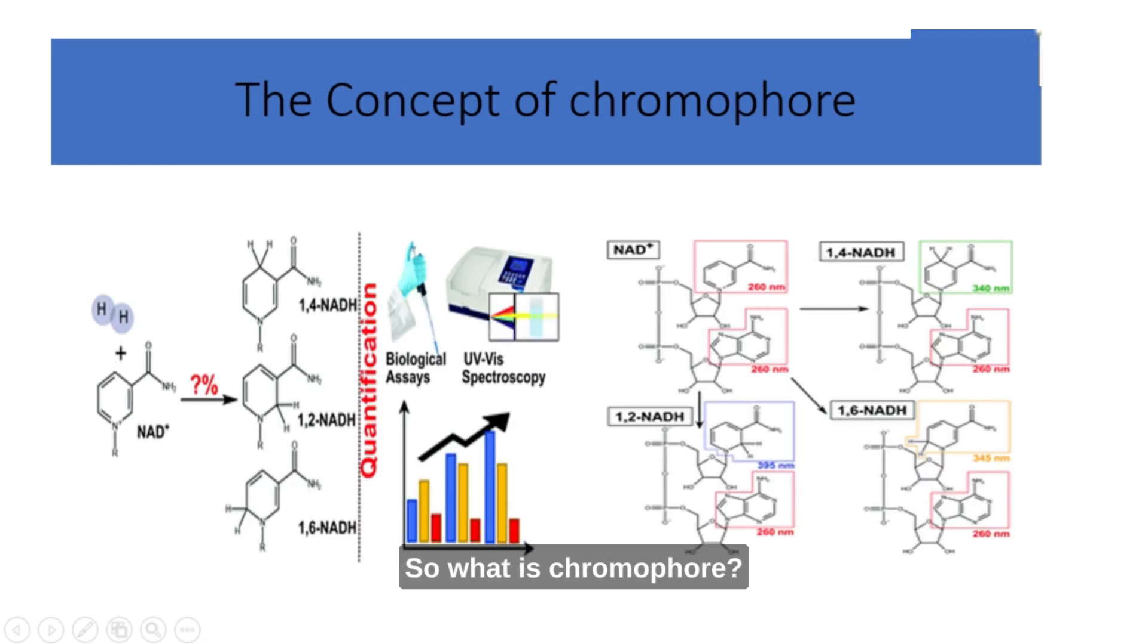So, what is chromophore? A chromophore is a particular part of a molecule responsible for its color or ability to absorb and reflect light. Imagine you have a molecule, and within that molecule, there is a specific group or atom that has the power to interact with light. This particular group or atom is called a chromophore.